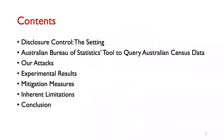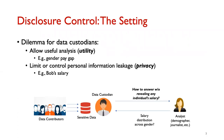These are the contents of this talk. I will start with the disclosure control setting, which is the focus of our attack. Then I'll talk about the Australian Bureau of Statistics tool to query Australian census data. Then I'll discuss our attacks on this tool, some experimental results, some mitigation measures, some inherent limitations, and I will finally conclude.